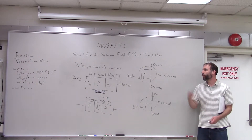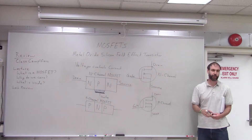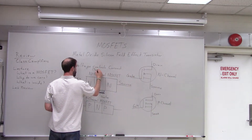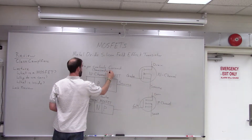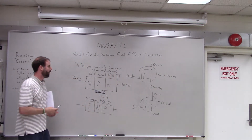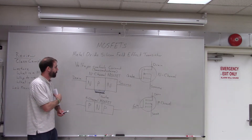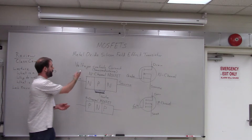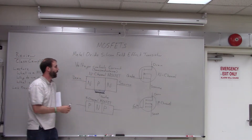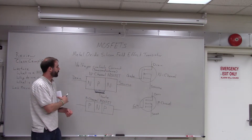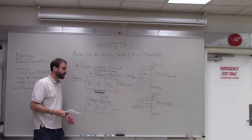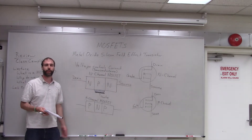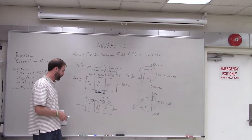Since we use voltage to control current, we have a special name for this type of operation — we call it transconductance. The prefix 'trans' usually means one thing controlling or changing to something else, so this is a change between voltage and current — voltage is controlling current. This is a transconductance device. We can draw something called a transconductance curve, which relates the voltage to the amount of current flowing through the device.